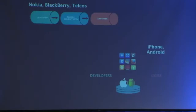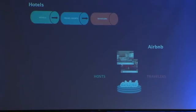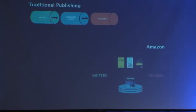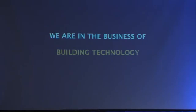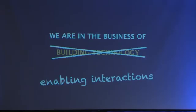We've already seen this happening in various industries. Telecom pipes have moved to platforms. Accommodation — hotels working on a pipe model — are struggling and being disrupted. We've seen this in traditional publishing and a whole range of industries. The idea essentially is that if we still think platforms are about building technology, we've got it wrong — because platforms are about enabling interactions.